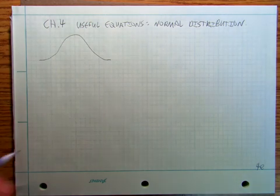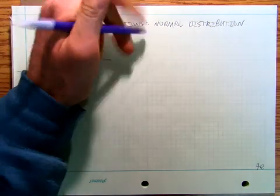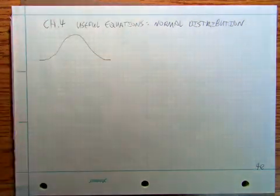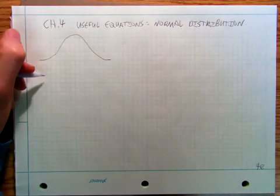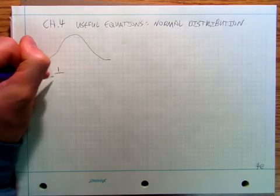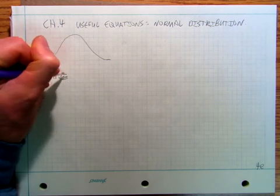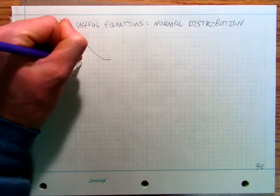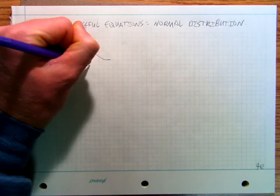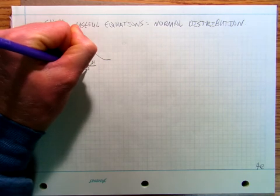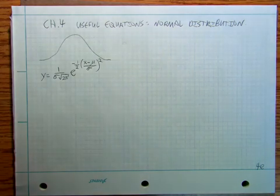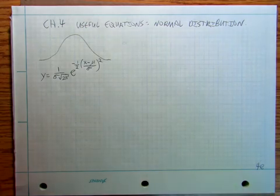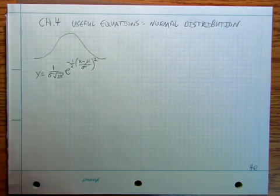If you look up the normal distribution on Wikipedia, it's going to have the following function: y equals 1 over sigma times the square root of 2π, times e to the negative one-half times (x minus mu over sigma) squared. And you go, oh my god. Okay, it's not all that bad — and I want to show you in this video that it's not all that bad and you can learn a lot more than you might think immediately.